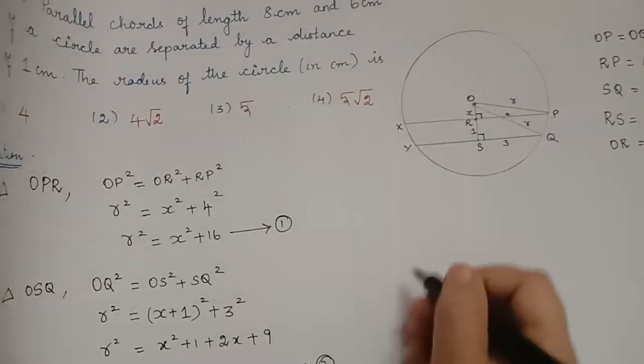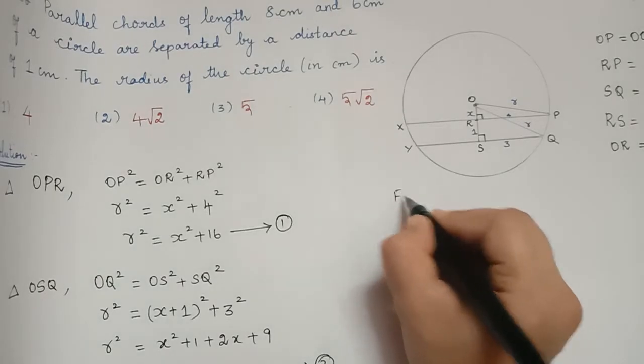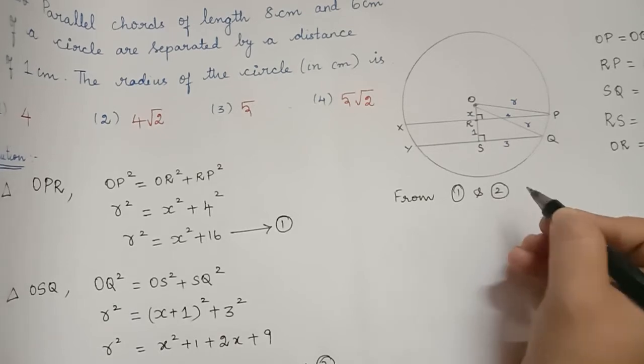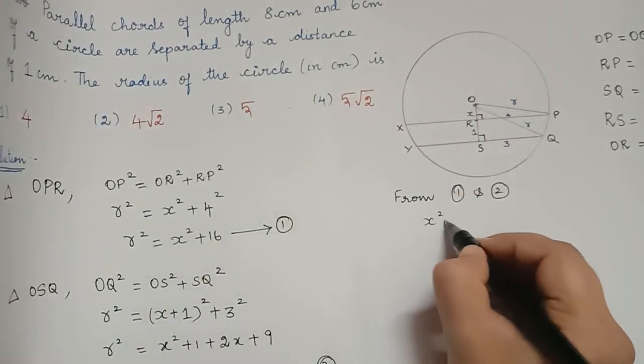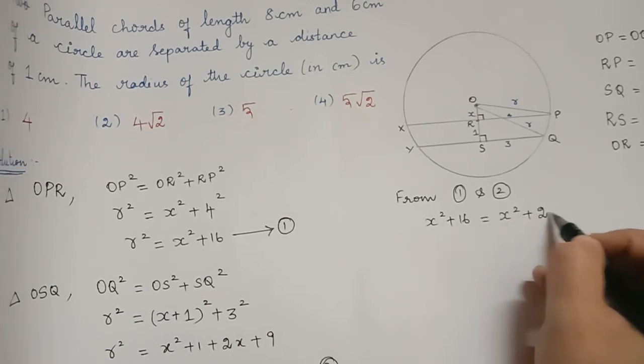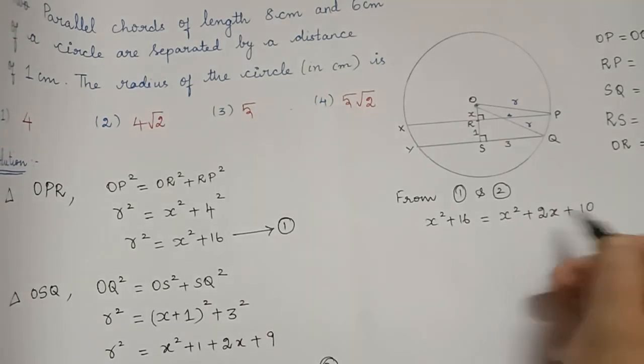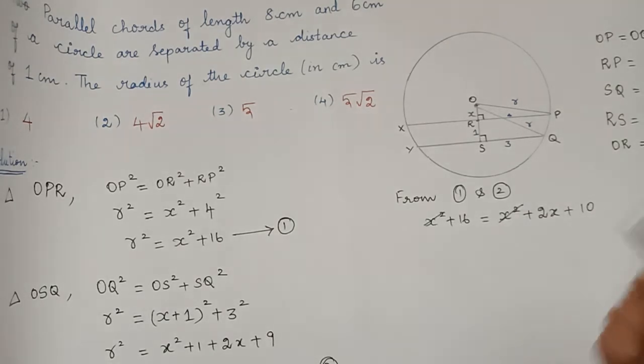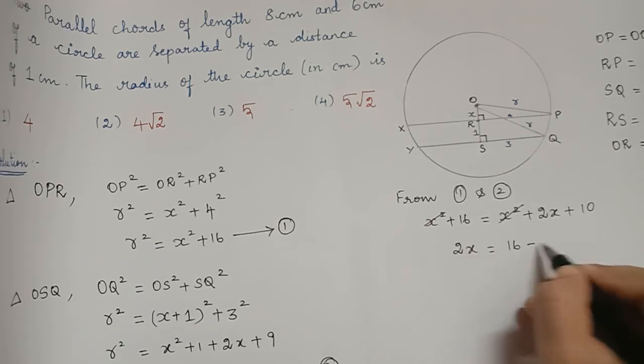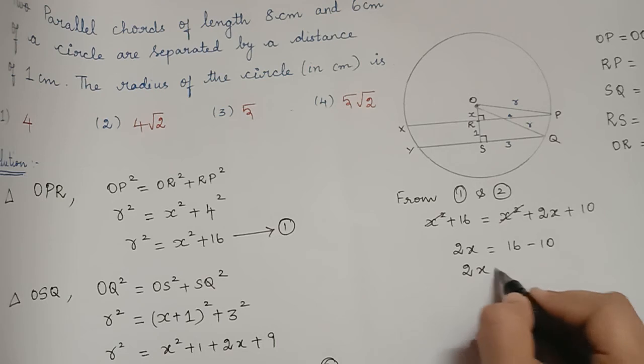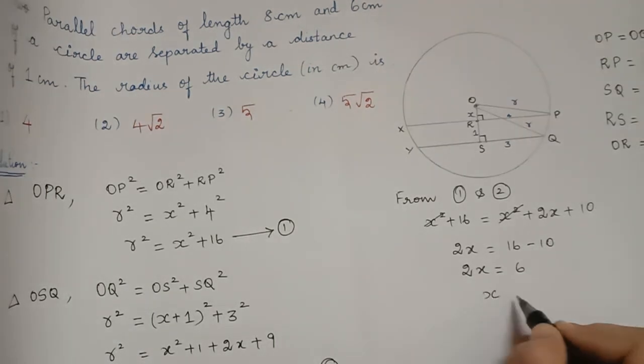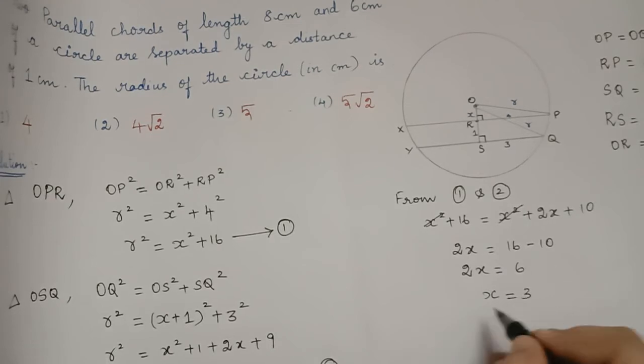From equation 1 and equation 2, we find that X squared plus 16 is equal to X squared plus 2X plus 10. So, X squared here and X squared gets cancelled and 2X will be equal to 16 minus 10. So, 2X is equal to 6 and therefore X is equal to 3 centimeter.